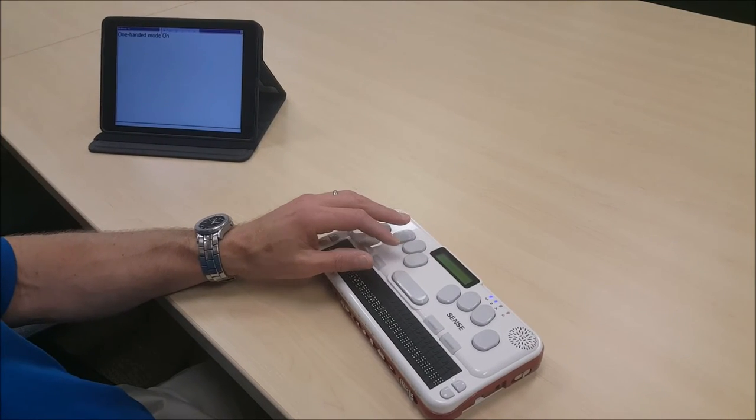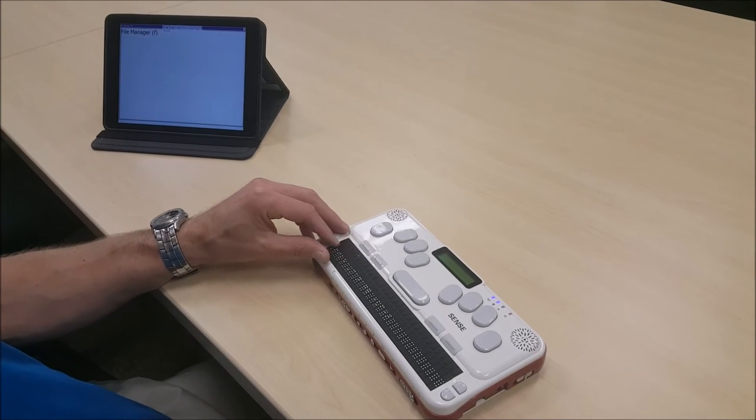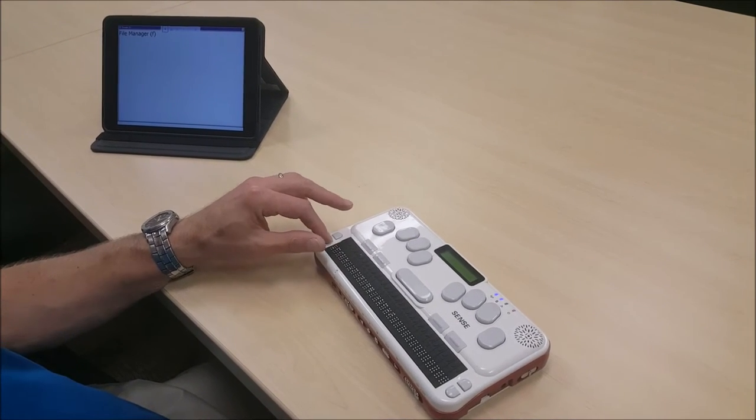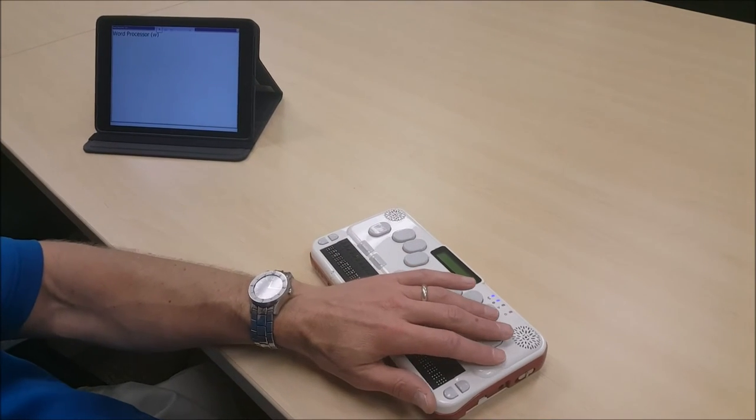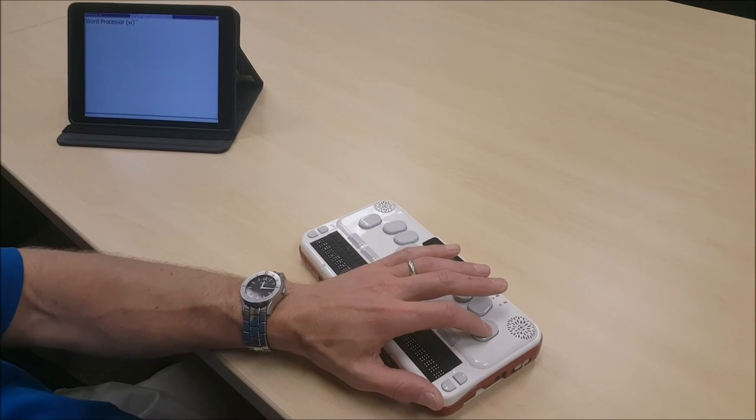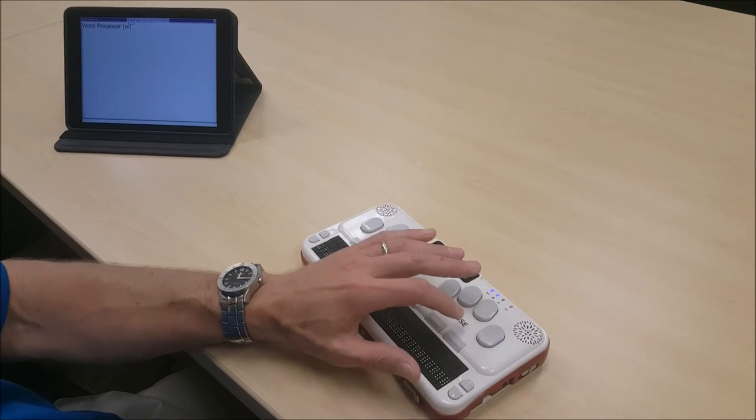One-handed mode on. Now one-handed mode is turned on on my braille sense. I'm going to scroll down to my word processor. Word processor W. And I'm going to press enter, and in this case, because one-handed mode is on, I'm going to press enter twice.